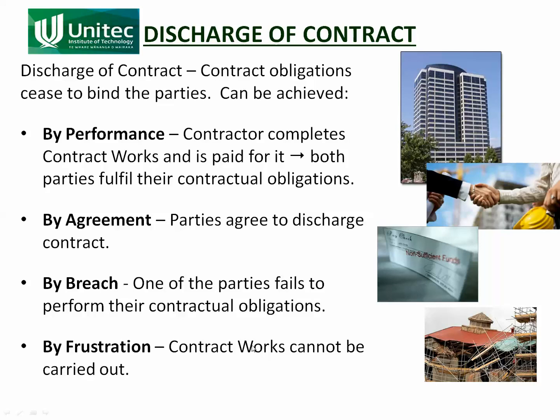The classic case is this building here in Christchurch. The first earthquake came along and the building was cracked. A contract was let to fix the cracks. The second earthquake came along while the contract was underway — you can see they had the scaffolding up — and demolished the building. So now the original contract to repair the cracks can't be carried out because the building's fallen down, and that original contract has to be discharged by frustration.